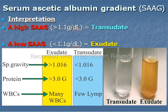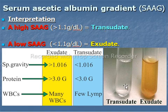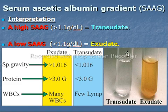Interpretation: When the serum ascitic albumin gradient is greater than 1.1 gram per dL, the ascitic fluid is a transudate. When the serum ascitic albumin gradient is less than 1.1 gram per dL, it suggests the ascitic fluid is an exudate.